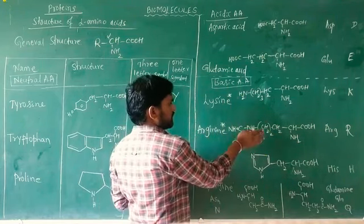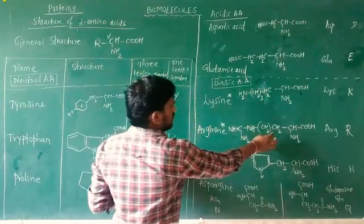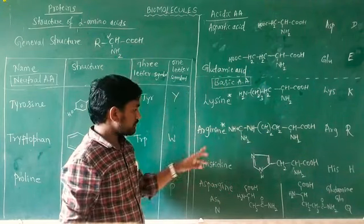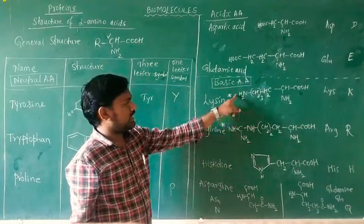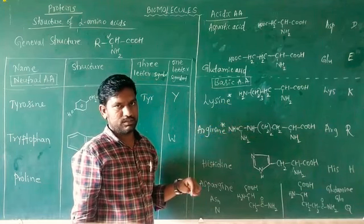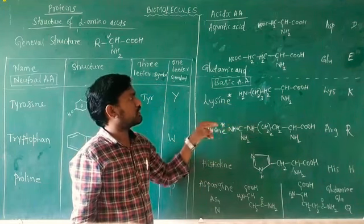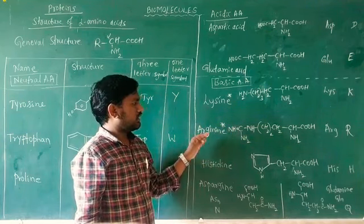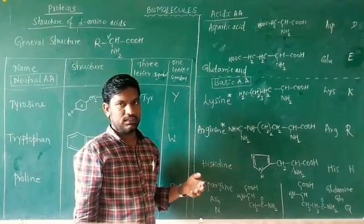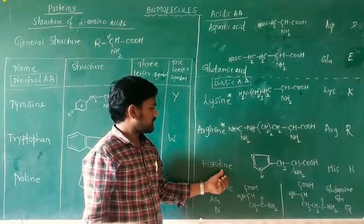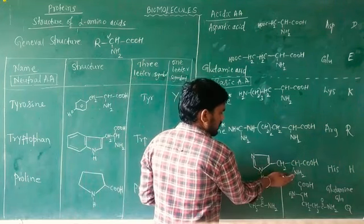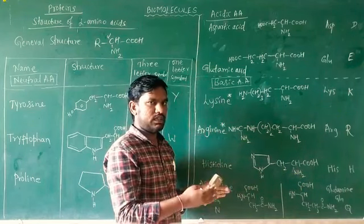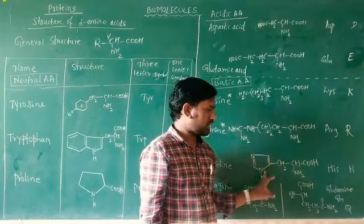A star symbol indicates essential amino acids — those not synthesized in the body and must be taken in through diet. Histidine also has two NH2 groups in its structure compared to one COOH, making it a basic amino acid. Three-letter symbol is HIS and one-letter symbol is H. Asparagine also contains two basic units compared to one acidic group, so it is a basic amino acid. Three-letter symbol is ASN and one-letter symbol is N.